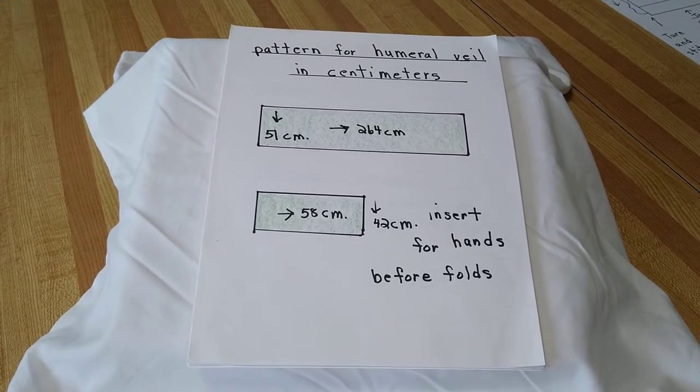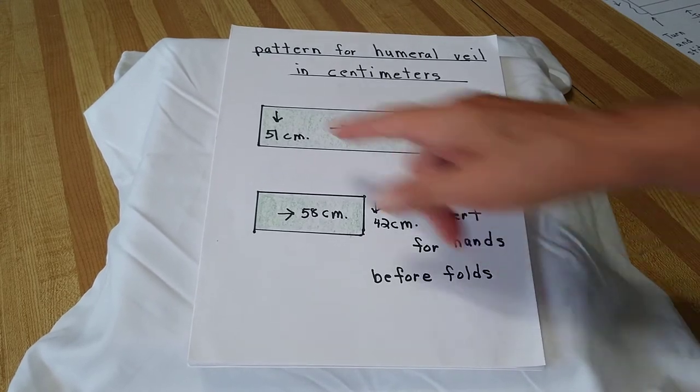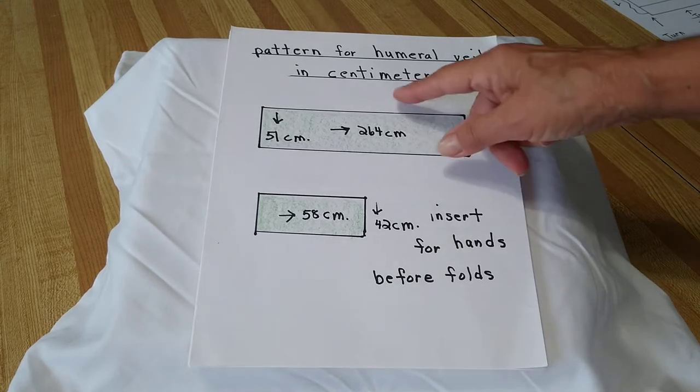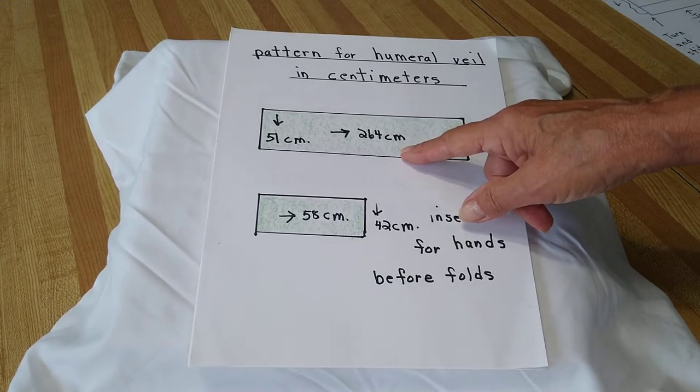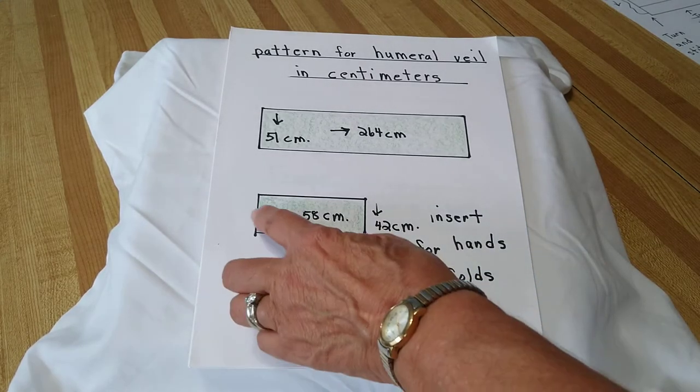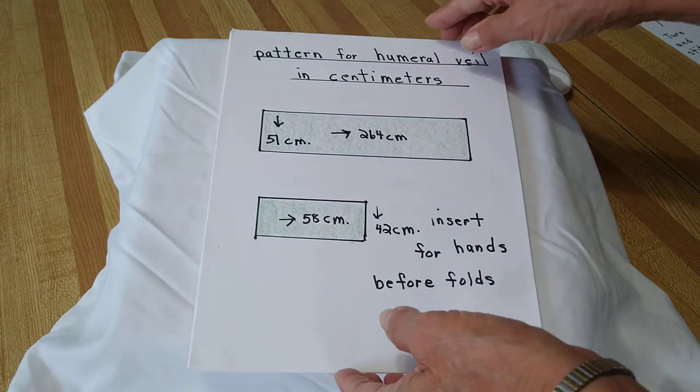This video will be the pattern for a humeral veil in centimeters. Your pattern will be 264 centimeters across, 51 centimeters down. The insert for the hands before the folds: 58 centimeters across, 42 centimeters down.